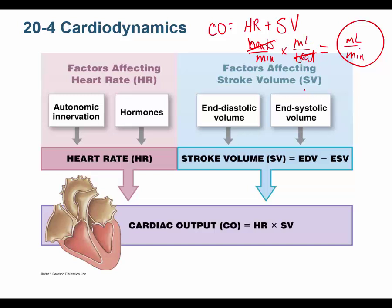Let's do the math. Stroke volume of 80 mL per beat times 72 beats per minute gives us 5,760 milliliters per minute. Here's what I want you to remember: that's your entire blood volume pumped every single minute. That's how efficient the heart is.